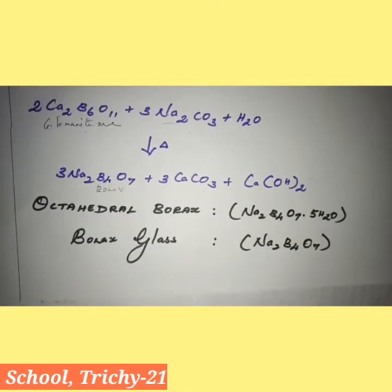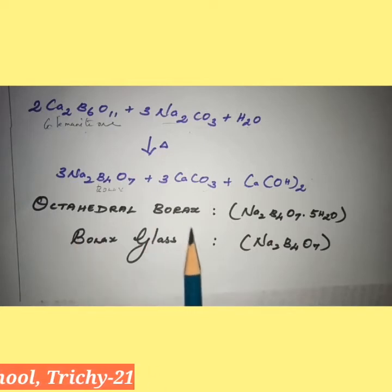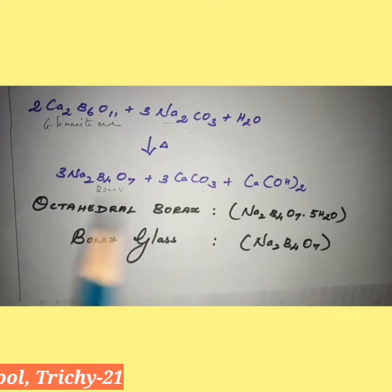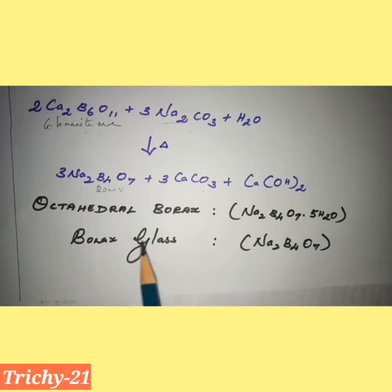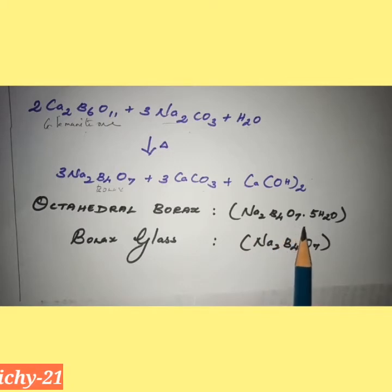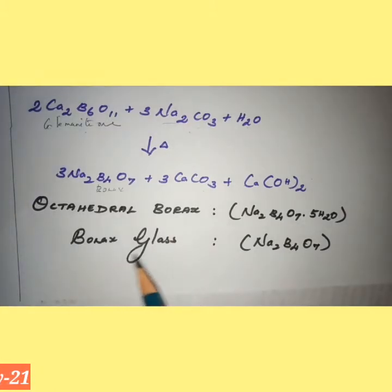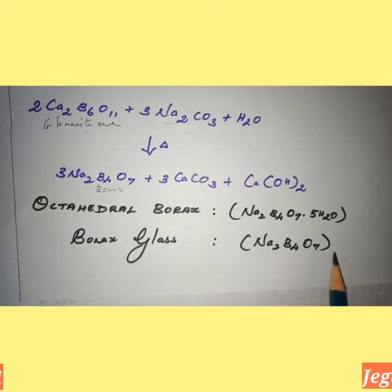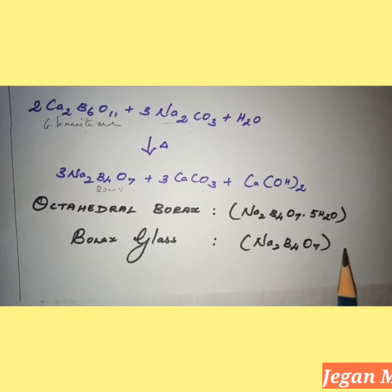Borax also exists in other forms, namely jeweller's or octahedral borax, and borax glass. The general formula for octahedral borax is Na₂B₄O₇·5H₂O. The next form is borax glass, whose general formula is Na₂B₄O₇ — it does not have water molecules. So this is the anhydrous form; 'anhydrous' means without water molecules. This is a transparent glass solid.